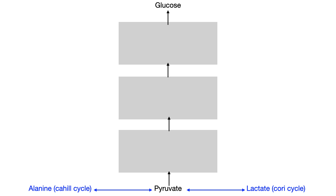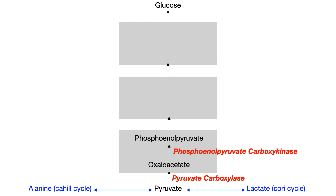The first step is actually a two-parter: it converts pyruvate into oxaloacetate using the enzyme pyruvate carboxylase. The second mini-step converts oxaloacetate into phosphoenolpyruvate (PEP) through the enzyme phosphoenolpyruvate carboxykinase. So big picture, the first step gets you from pyruvate to phosphoenolpyruvate — pyruvate to oxaloacetate, then oxaloacetate to phosphoenolpyruvate.